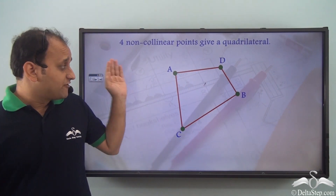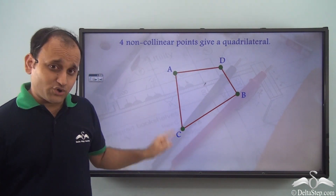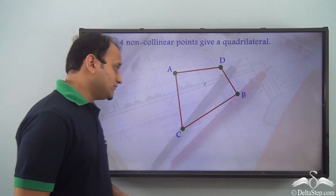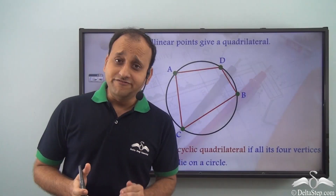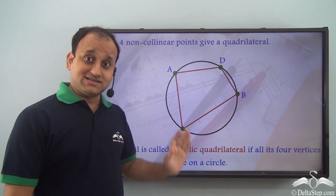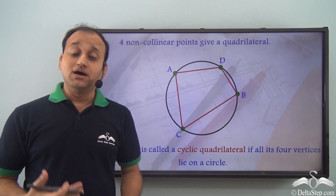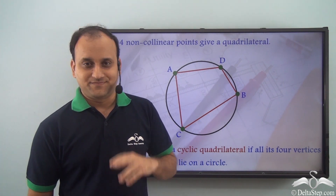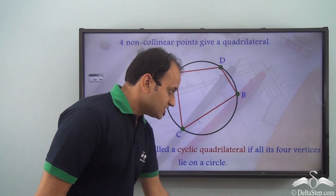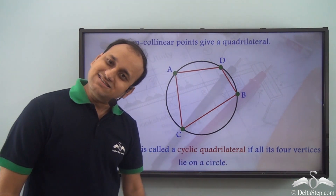We know that if we have four non-collinear points and if we join them, we get a quadrilateral. Now, if in the case of a quadrilateral, all the four vertices lie on a circle, then such a quadrilateral is called a cyclic quadrilateral. So, a quadrilateral is called a cyclic quadrilateral if all its four vertices lie on a circle.